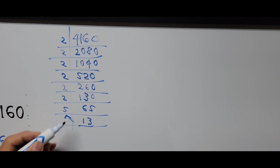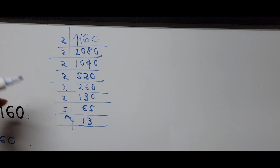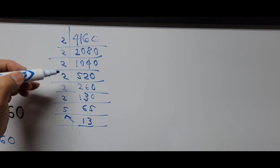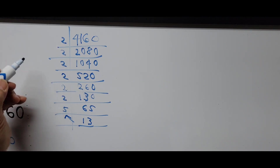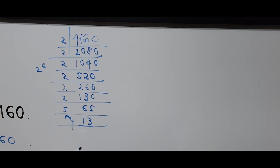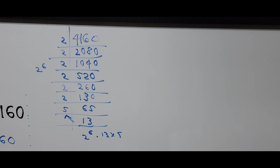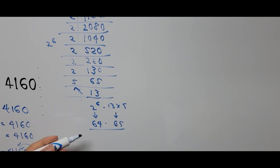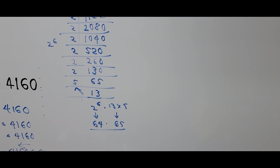Combining the results: we divided by 2 a total of 6 times, giving us 2 to the power of 6, and then 13 times 5. So the factors are 2⁶ and 13 × 5. Since 2⁶ = 64 and 13 × 5 = 65, that's how I arrived at the factors 64 and 65.